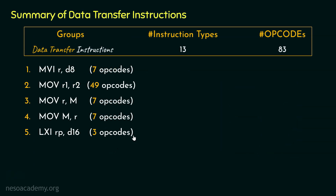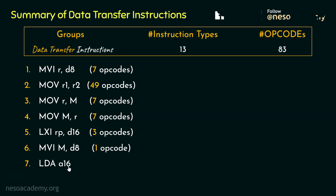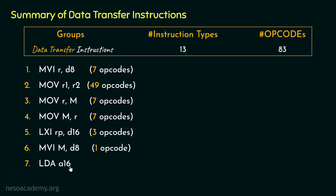The sixth type is MVI M, D8 — also an immediate addressing mode instruction. There is only one instruction of this type, MVI M, where D8 can be any 8-bit data specified by the instruction, so with this we covered one more opcode. The seventh type is LDA A16, which loads the accumulator with the content at the 16-bit memory address sent via the instruction. There is only a single opcode for this type because the accumulator is a special-purpose register.